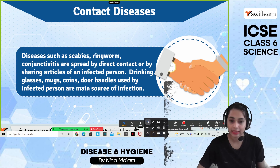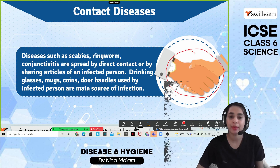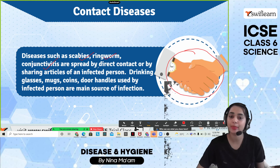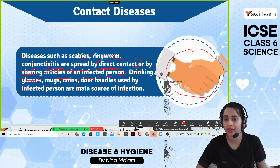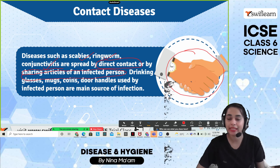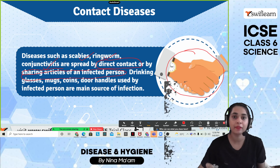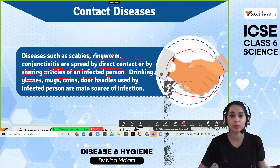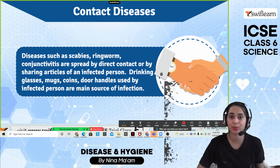The next category is contact diseases. Diseases such as scabies, ringworm, and conjunctivitis are spread by direct contact, or by sharing articles of an infected person. Drinking glasses, mugs, coins, and door handles used by infected persons are main sources of infection. If you share things used by an infected person, you can also get the disease. Please take proper vaccines and medication to prevent these diseases.